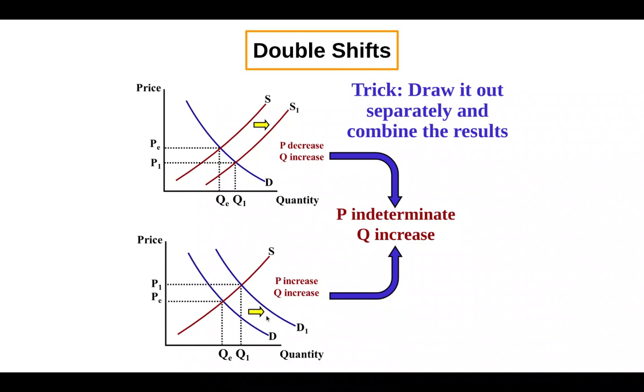If you get the same answer for both, then write that answer, quantity increases. But if you get different answers for one of the variables, which you will with a double shift, then you would write indeterminate. So the last pro tip I will leave you is when you have a double shift, one of the two variables, price or quantity, will change, and the other will be indeterminate. So that is all for this video on market disequilibrium and changes to equilibrium.